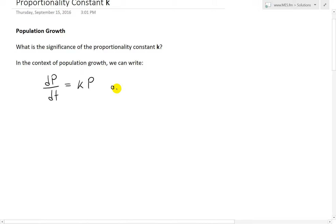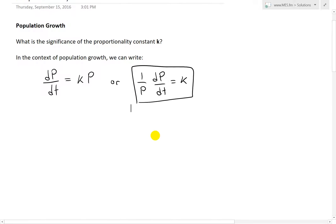And then if we rearrange this, what we end up getting is we can write k is equal to 1 over P times dP/dt. So basically we have a differential equation you could write in both forms, but I want to write it in this form to get a better idea of what this k constant is.